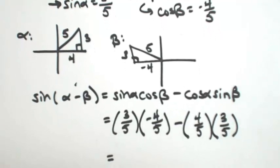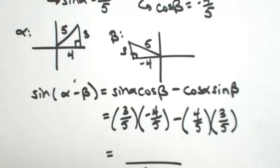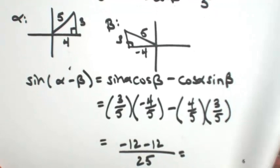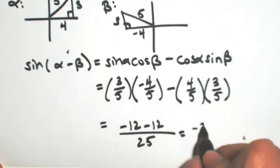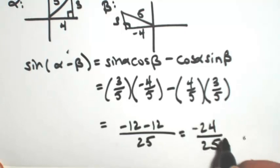So multiplying this out, the denominators would be, both of them would be 25. So then I would get negative 12 minus another 12. So this whole problem becomes negative 24 over 25.